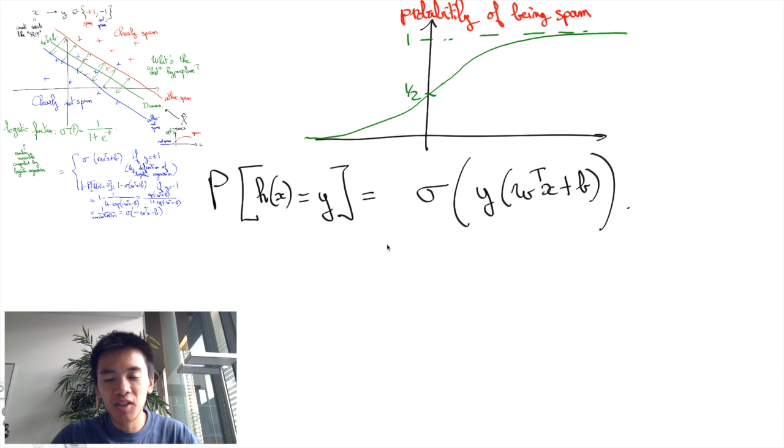The key now is to find a sensible measure of how bad the logistic regression is that allows for easy computation, kind of like in the linear regression case.